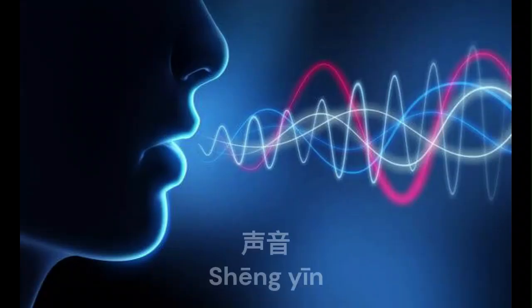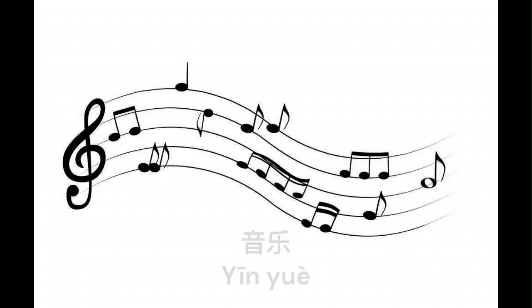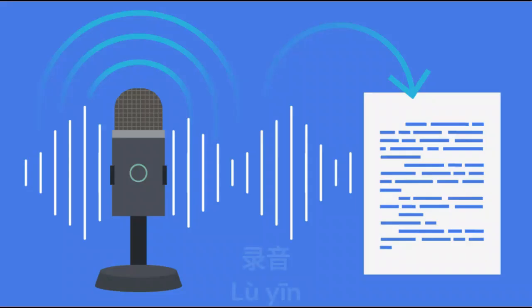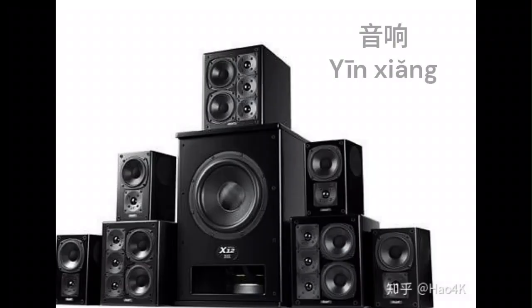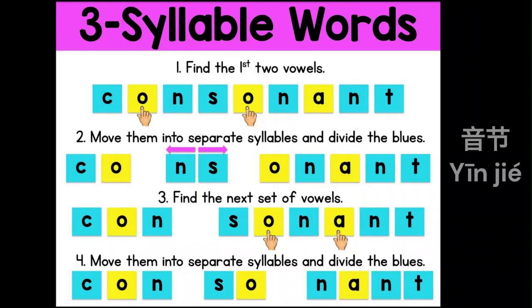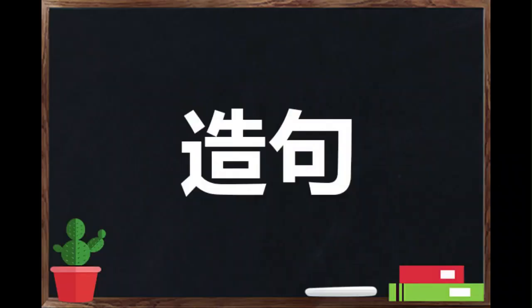声音 (shēngyīn) — sound or noise. 音乐 (yīnyuè) — music. 录音 (lùyīn) — sound recording. 音响 (yīnxiǎng) — acoustics. 音节 (yīnjié) — syllable. Now let's try a sentence.